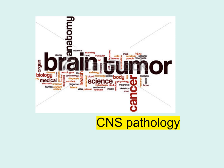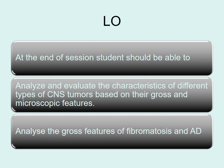Assalamu alaikum. Today we are going to cover CNS pathology. The learning objectives are: at the end of this session, students should be able to analyze and evaluate the characteristics of different types of CNS tumors based on their gross and microscopic features, and analyze the gross features of fibromatosis and Alzheimer's disease.